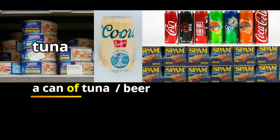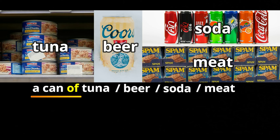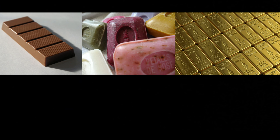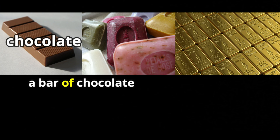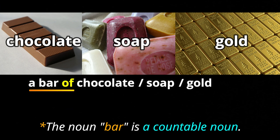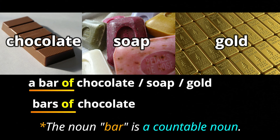A can is a very popular container. We use it for things like a can of tuna, a can of beer, a can of soda, or a can of meat. If there's more than one, we say cans of tuna, cans of beer, cans of soda, or cans of meat. Another very popular measure word is bar — we use bars to count things like chocolate: a bar of chocolate, a bar of soap, or a bar of gold. If there's more than one: bars of chocolate, bars of soap, or bars of gold — if you're lucky!